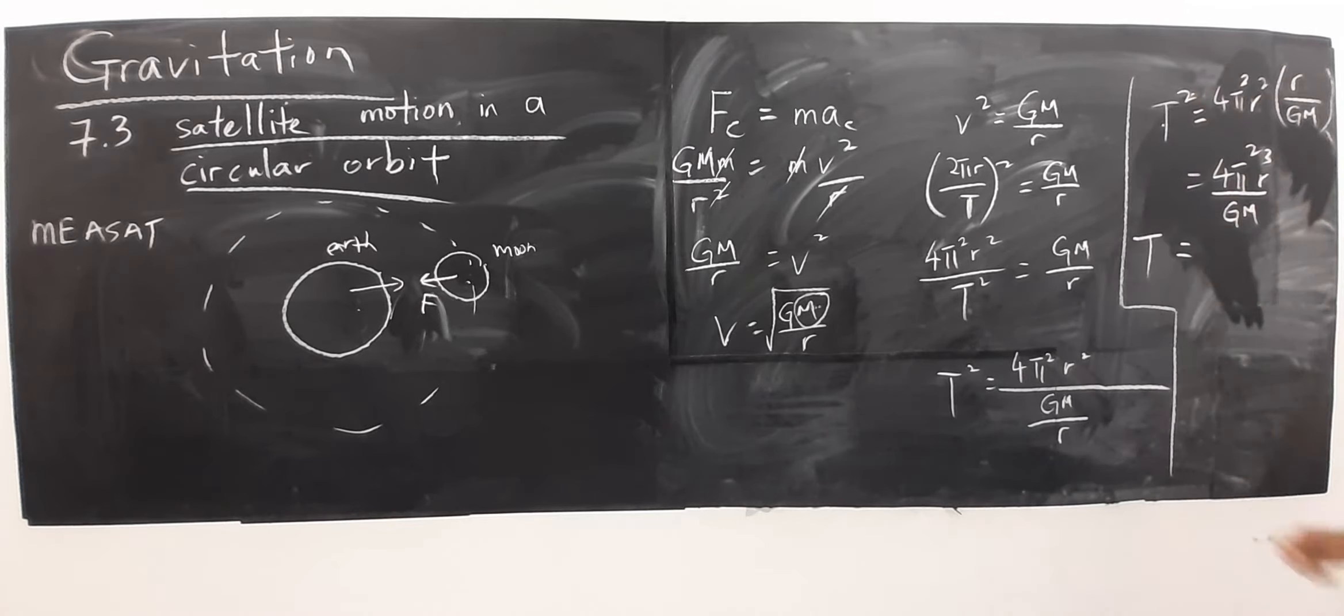Di sini T square. Saya nak T. Jadi apa yang saya buat? Square root 4 pi square. Square root 4 pi square, saya dapat 2 pi lah. Tapi yang lain ni, saya tetap pas simplify dah. So that's why formula for the period is like that. Alright.